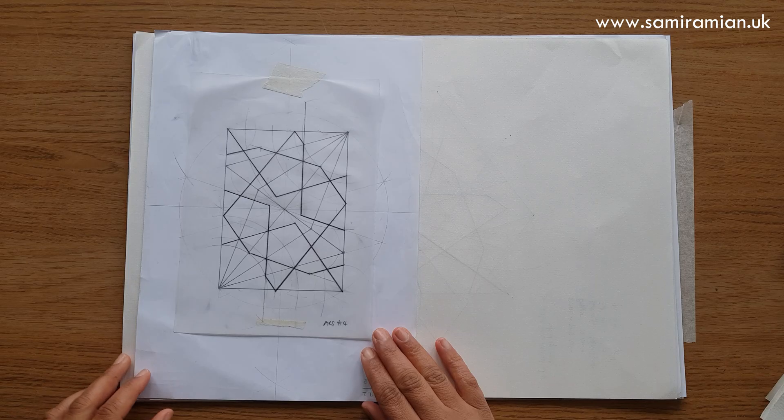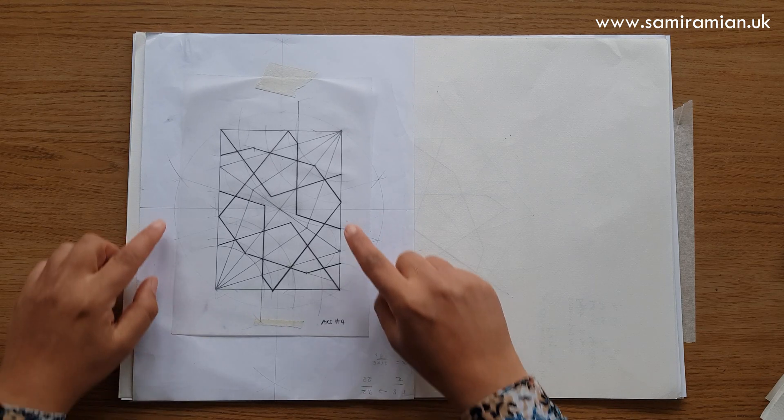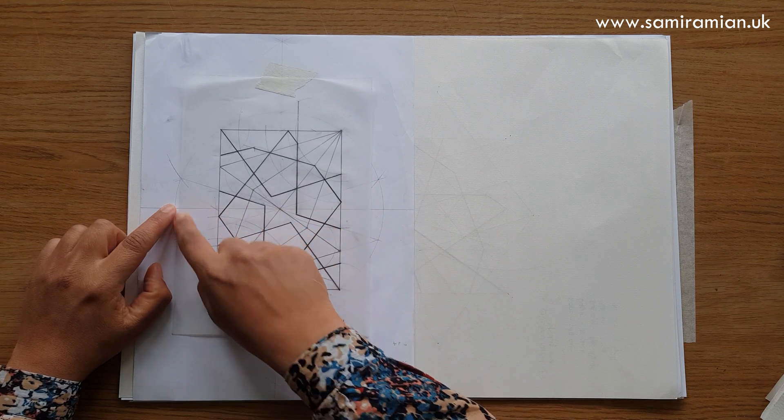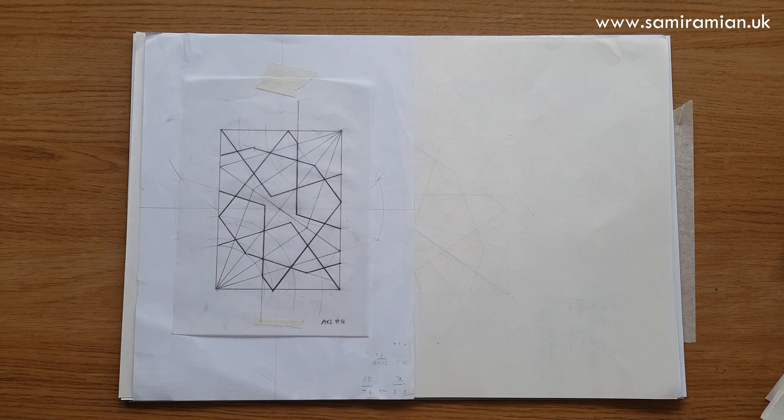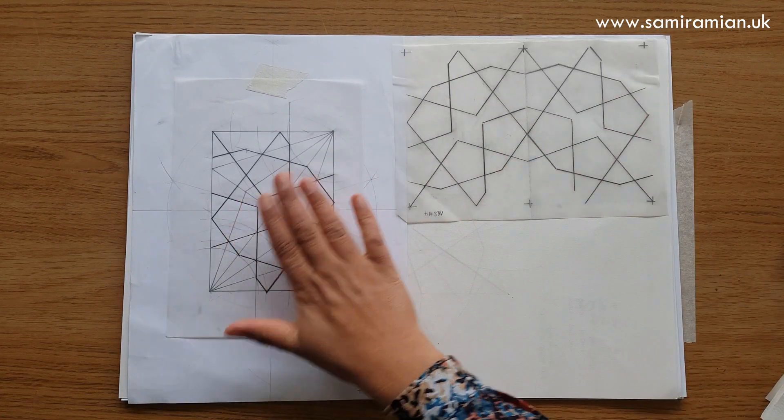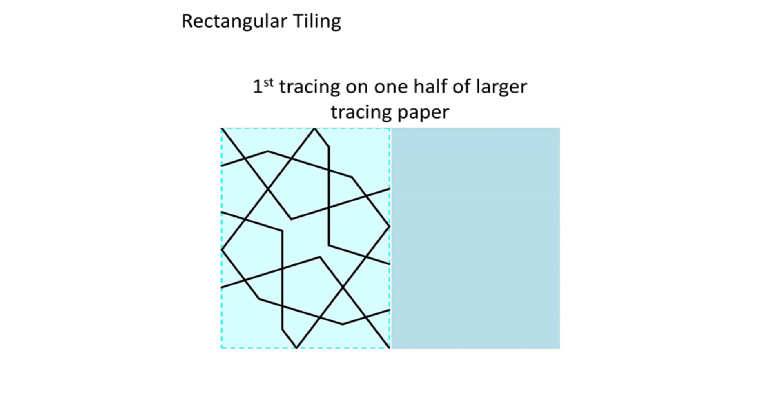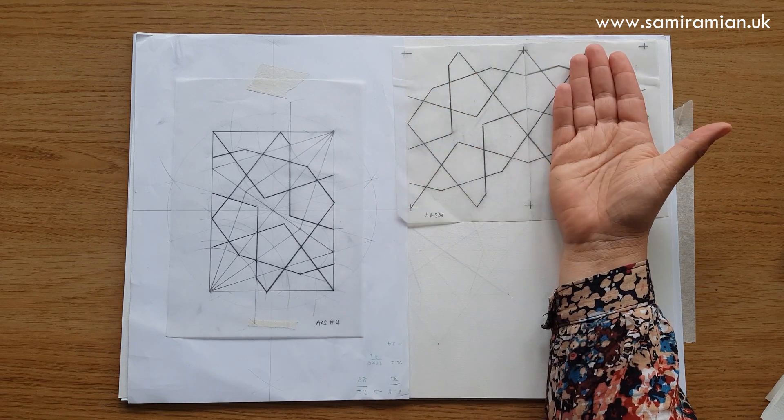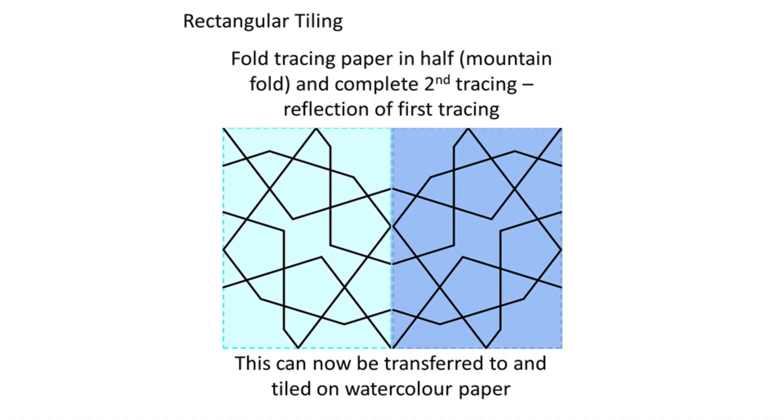Once you've drawn it at large scale, you might want to draw it at a smaller scale. I went quite small for this one—I went for a radius of 7 centimeters. From this one rectangle you can use a double that size piece of tracing paper, trace one side, fold it, get the reflection tracing, and then that's your piece that you can tile around to get one rectangle or two or however many you want.